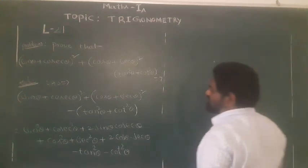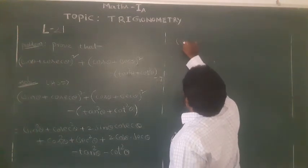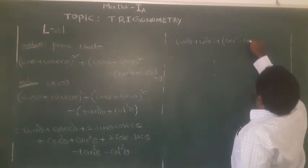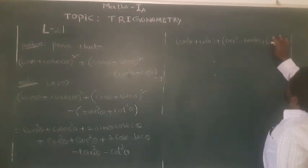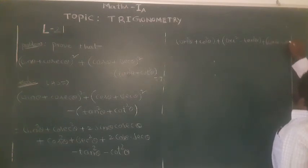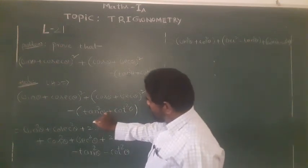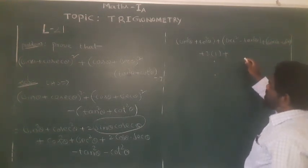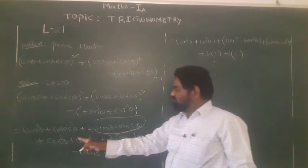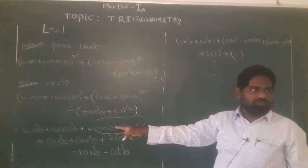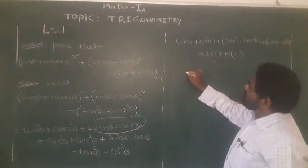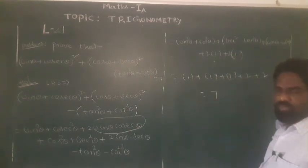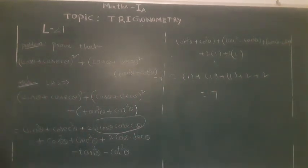Evaluating each group: sin²θ + cos²θ = 1. sinθ × cosecθ = 1, so 2sinθcosecθ = 2. cosθ × secθ = 1, so 2cosθsecθ = 2. sec²θ - tan²θ = 1, and cosec²θ - cot²θ = 1. Adding all: 1 + 2 + 2 + 1 + 1 = 7. Hence proved. The remaining will be done in the next class.